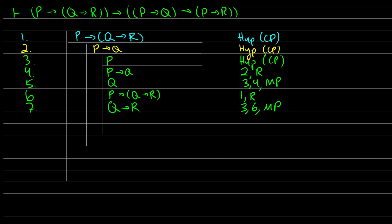Now I can do modus ponens again to get R: I have Q and Q→R, therefore R. So that is lines five and seven, modus ponens. Now I've shown that if I have P then I get R, so I can pull this out using CP. In line nine, from lines three to eight we did a conditional proof — we assumed P, showed we can get R, therefore we have P→R.